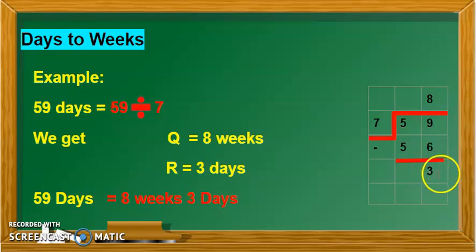Three is days and eight is weeks. The quotient is the weeks and the remainder is the days. So 59 days is actually eight weeks and three days.